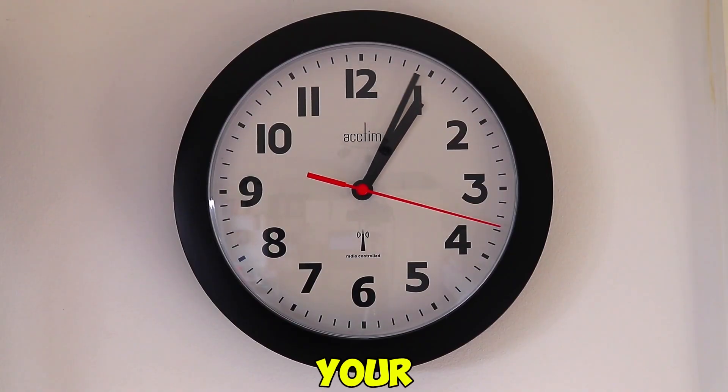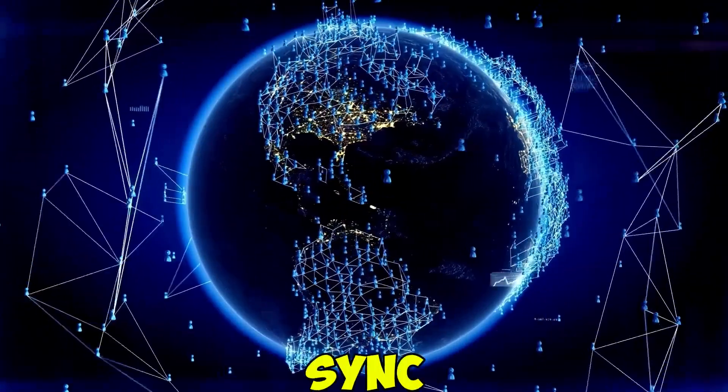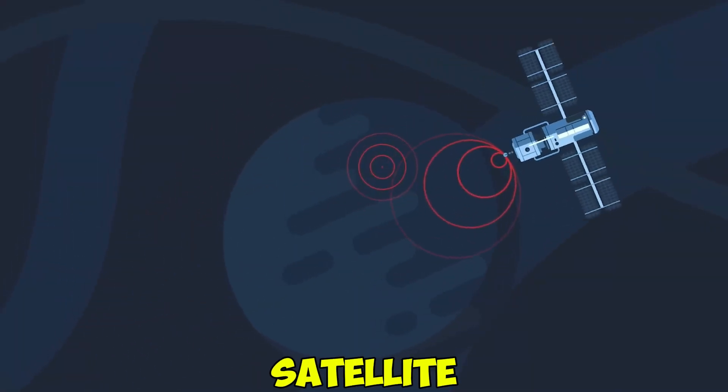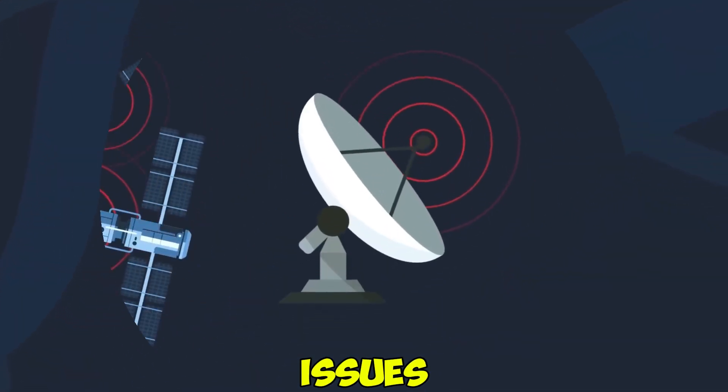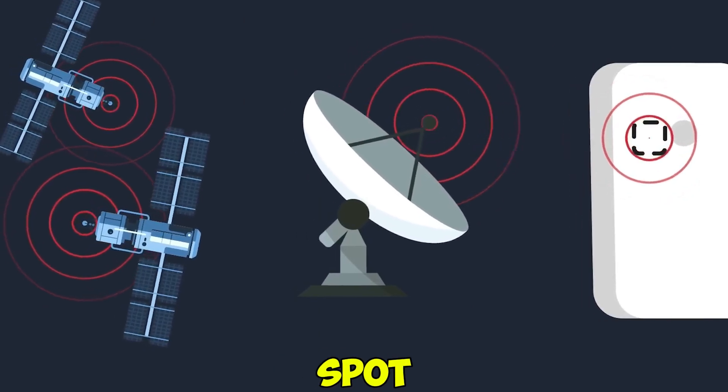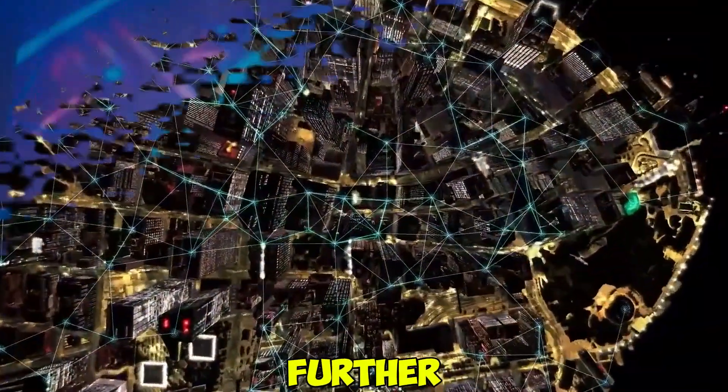This is especially important for errors caused by your device's clock not being perfectly in sync. In short, the fourth satellite helps correct timing issues, making sure the location you see is spot on. Let's break this down further.